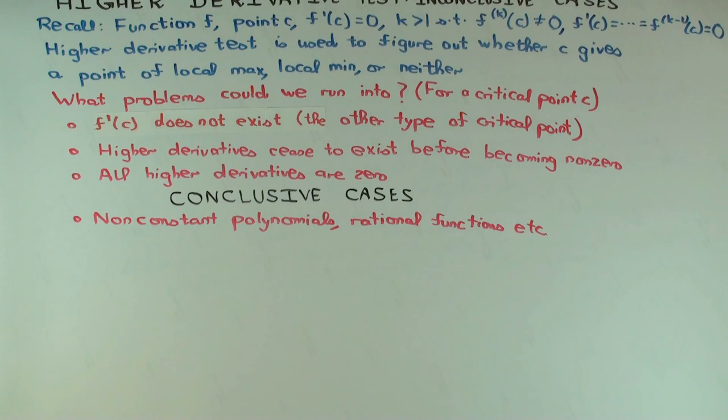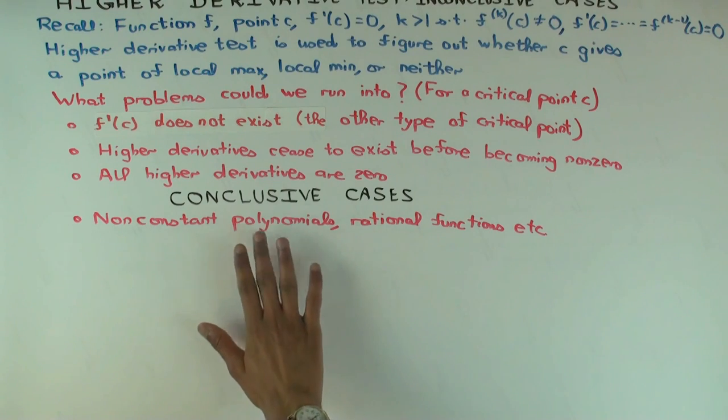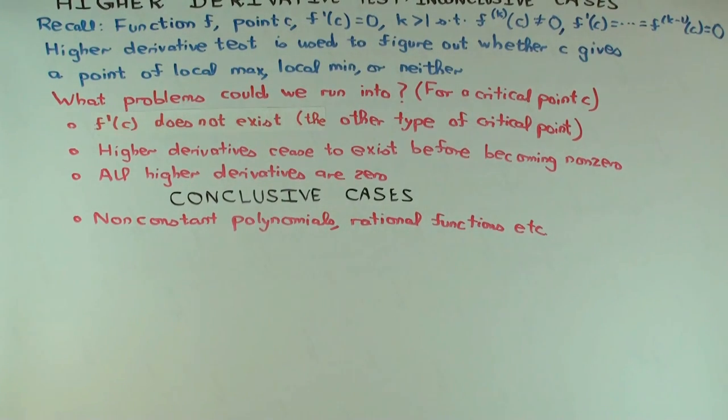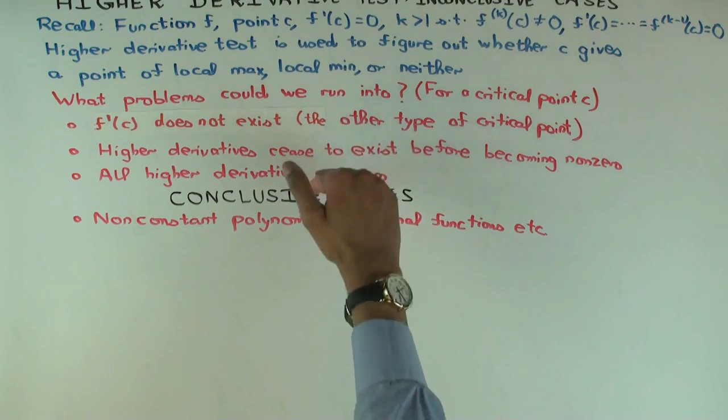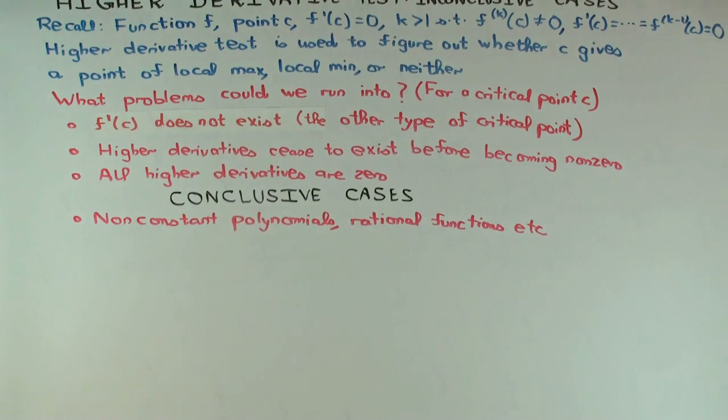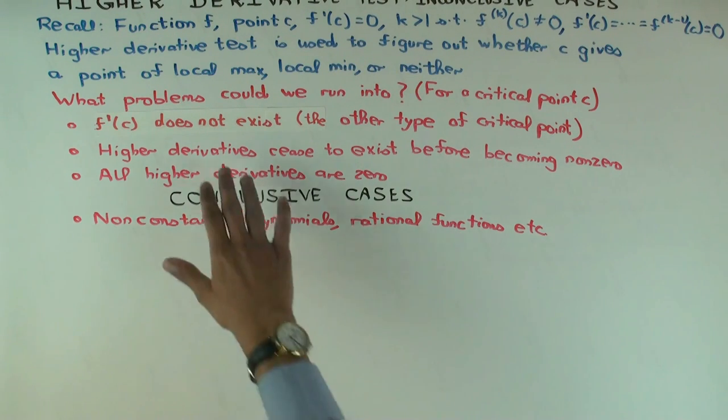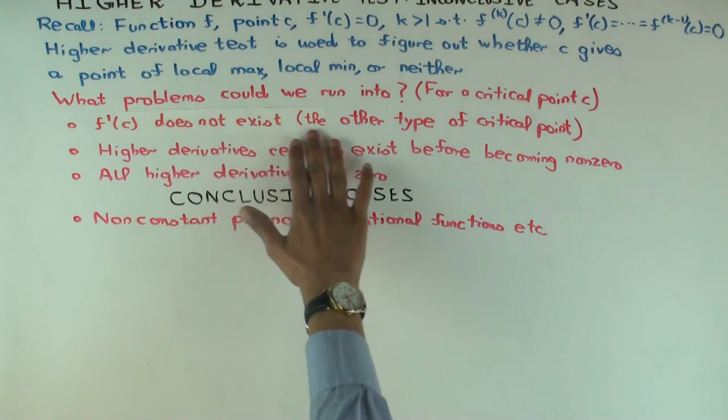I'm claiming the higher derivatives will always be conclusive for this. Why? Why is the higher derivatives always conclusive for non-constant polynomials and rational functions? Well, you have to figure out why none of these problems occur. So why did the first problem not occur? Oh, it always exists. Exists. That's not a problem.